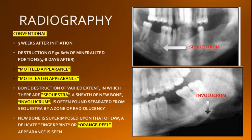In later stages, when the cortex is involved due to ischemia, a portion of cortical bone becomes devitalized. Gradual resorption around the periphery of the necrosed area causes the bone to separate off, forming a sequestrum. Subperiosteal new bone formation, called the involucrum, can be seen as a fine linear opacity at the lower border, often separated from the sequestrum by a zone of radiolucency. In the mandible, where new bone is superimposed upon the jaw, a delicate fingerprint or orange peel appearance is seen.